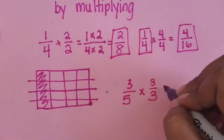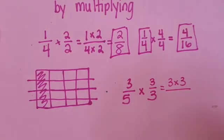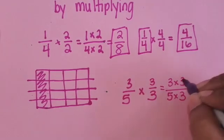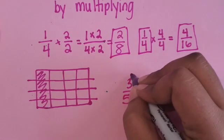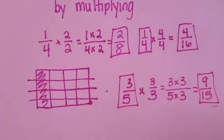3 times 3, so we can write it out, is going to be our new numerator and 5 times 3 is going to be our new denominator. 3 times 3 is 9, 5 times 3 is 15. So 3/5 is equivalent to 9/15.